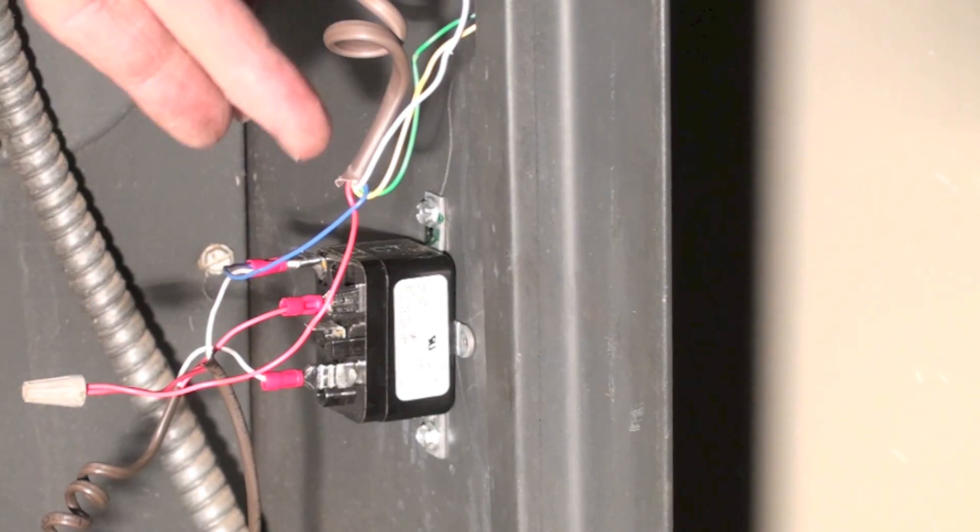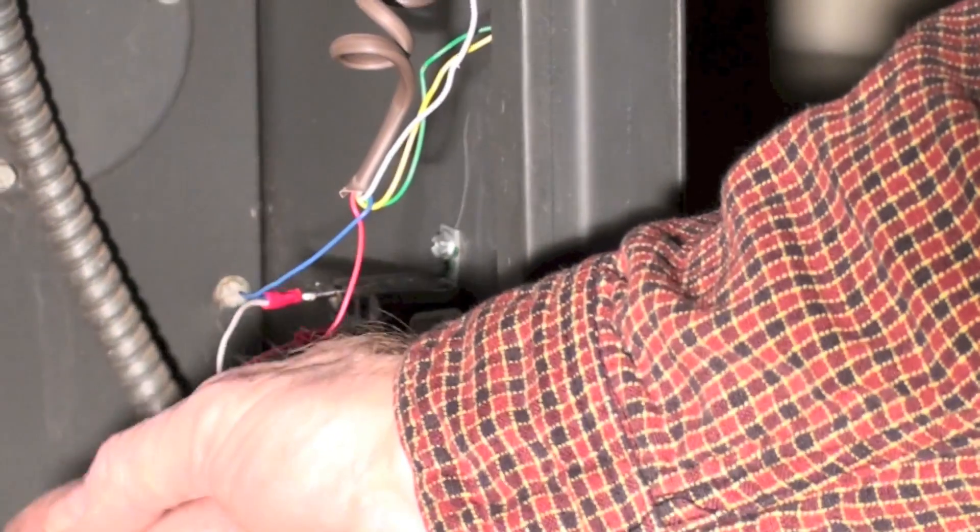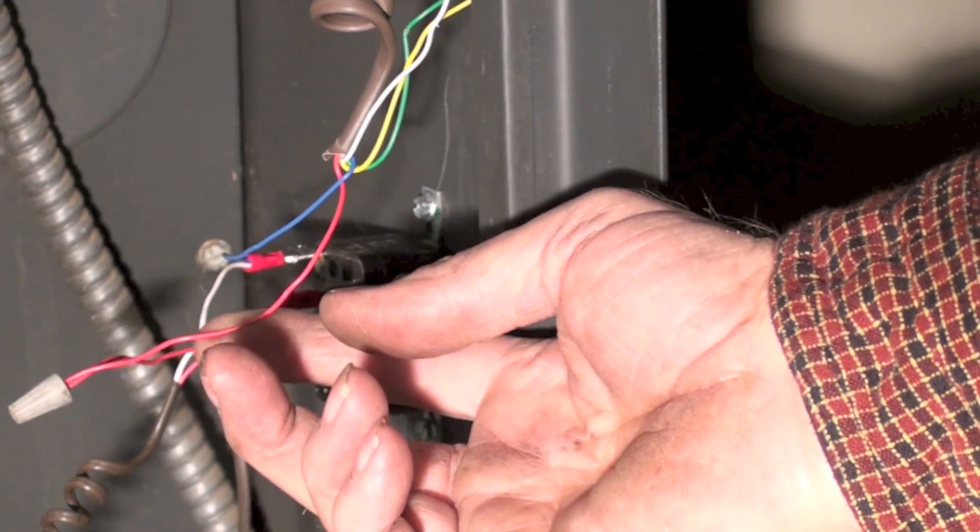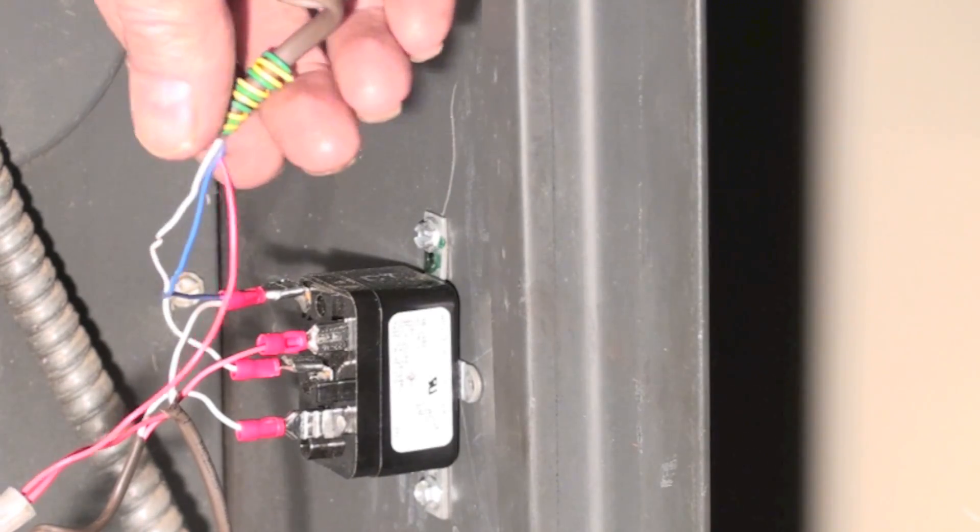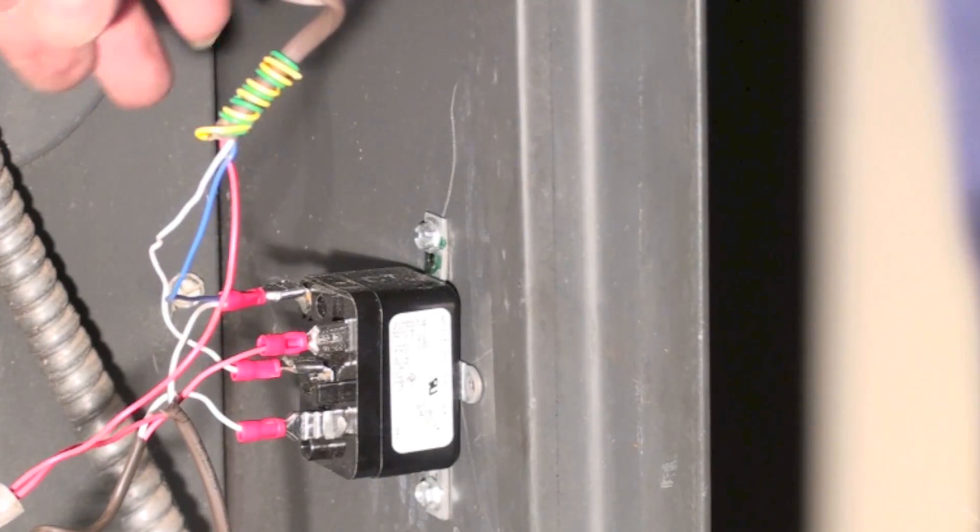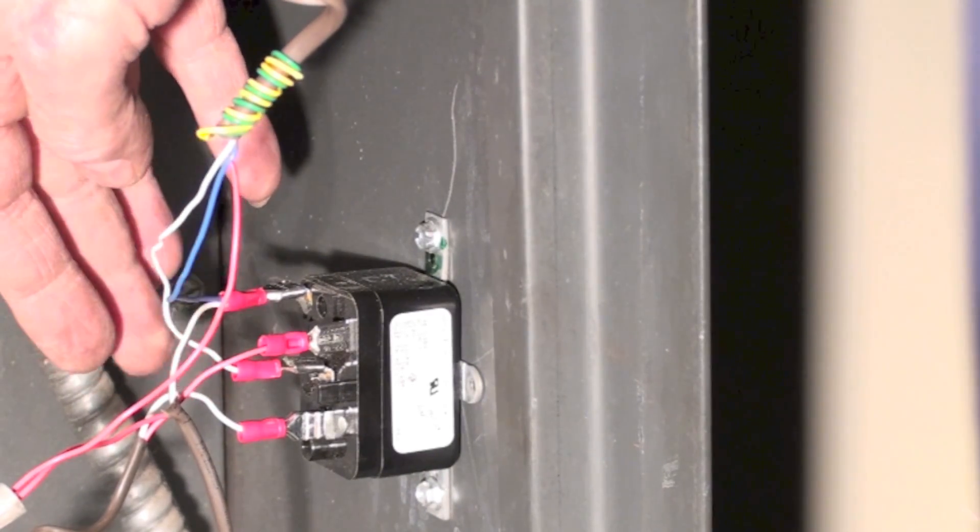And it's going up to the thermostat to supply common to the thermostat. Now I've taken the red off of the transformer, and this is the power that's going to go up to the thermostat.